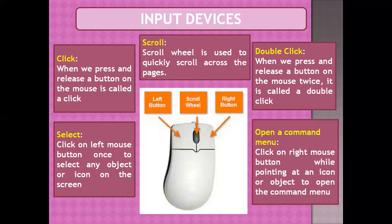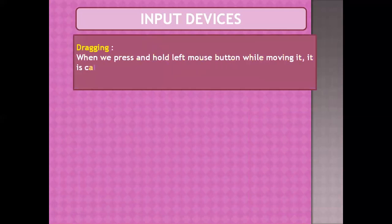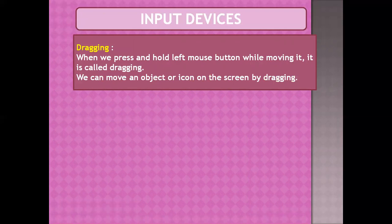The scroll wheel is used to quickly scroll across pages, as an easier alternative to pressing page up, page down, or arrow keys. Another function performed using the mouse is dragging. Dragging is when we press and hold the left mouse button while moving the mouse — we press the button without releasing it and move the mouse. While dragging, we can move any object or icon on the screen.